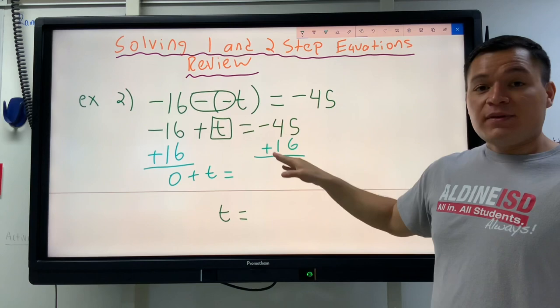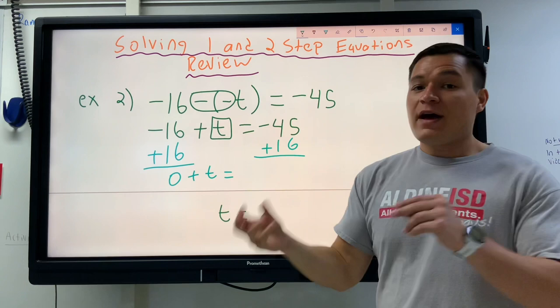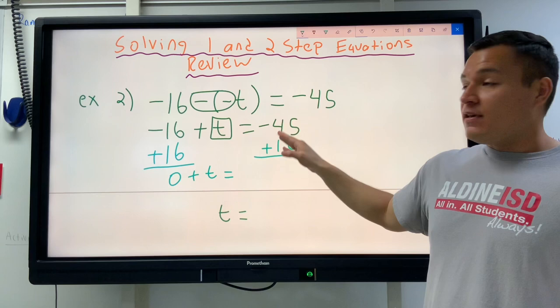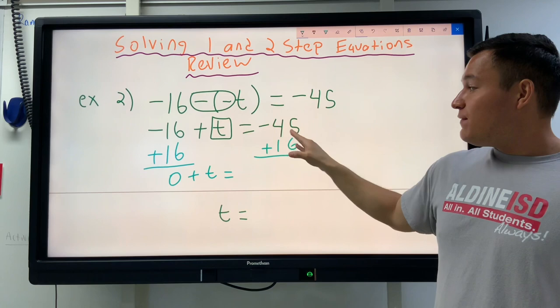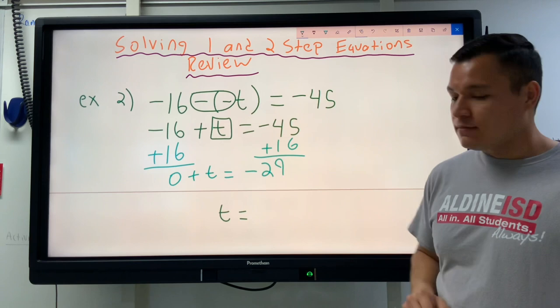Look at these two things. These two numbers have different signs. When numbers have different signs, they're not working together, or they're working against each other. So this negative 45 is not going to become larger. It's going to become closer to 0. Negative 45 plus 16 will become a negative 29. Negative 45 plus 16 is a negative 29.